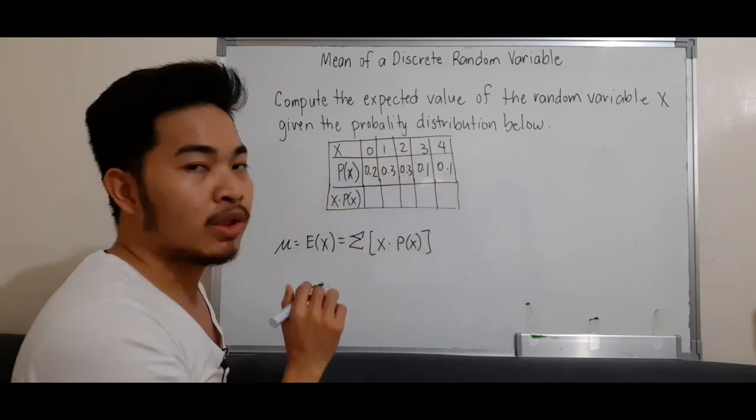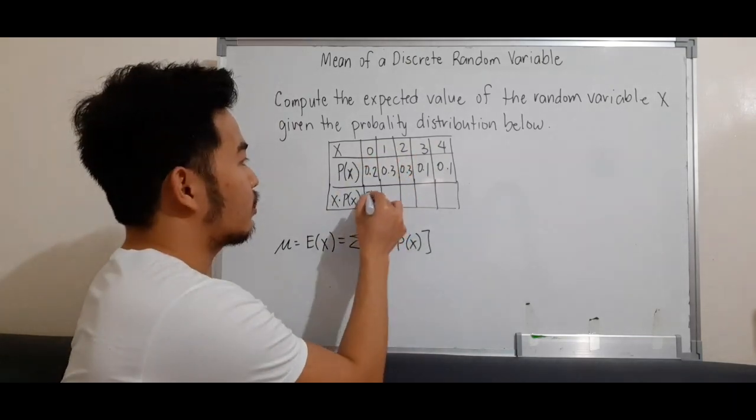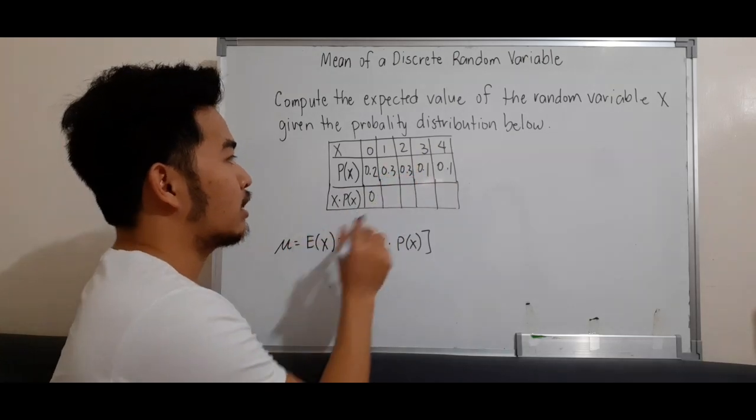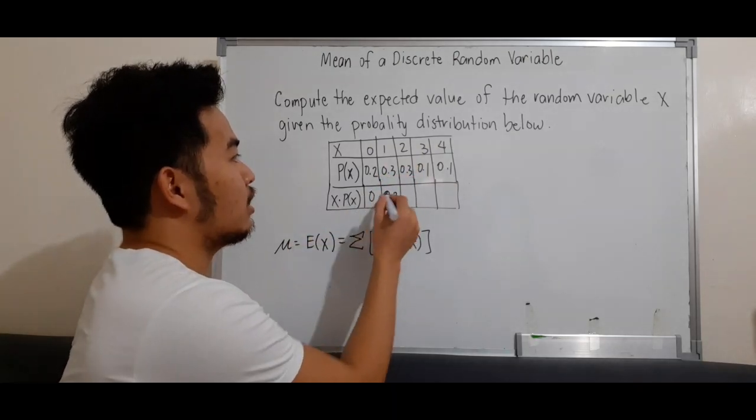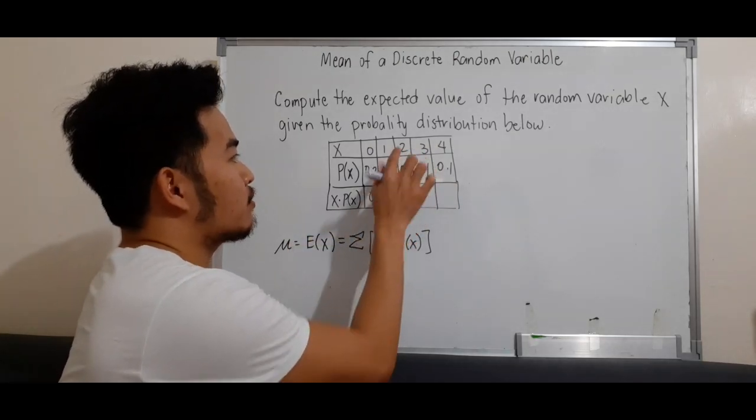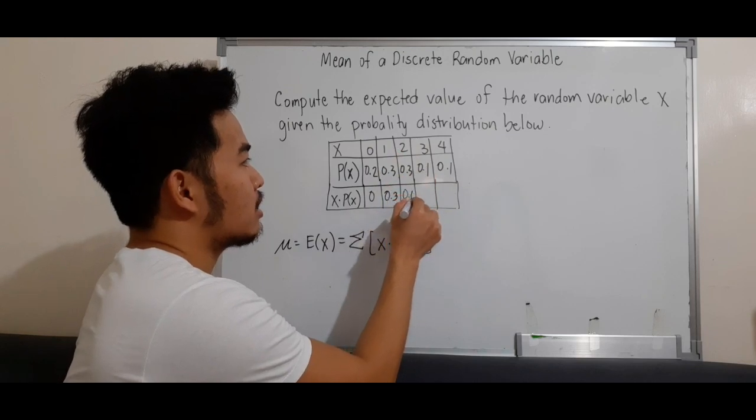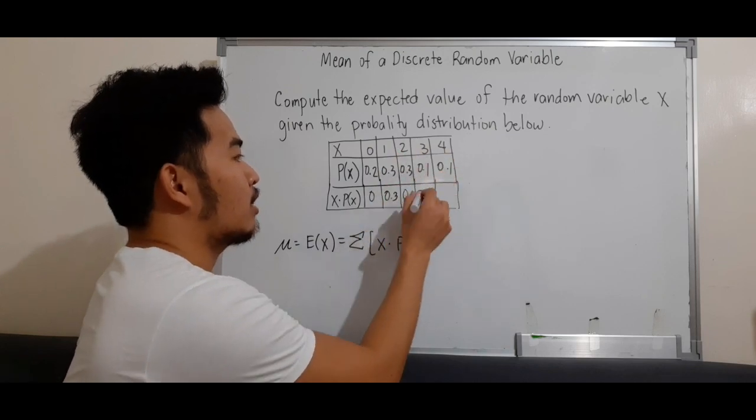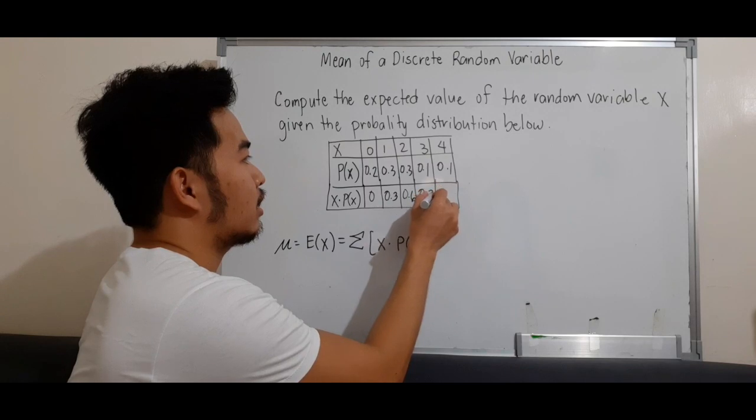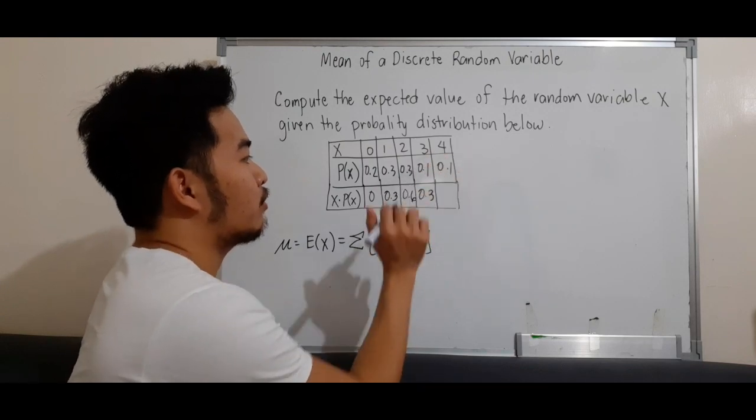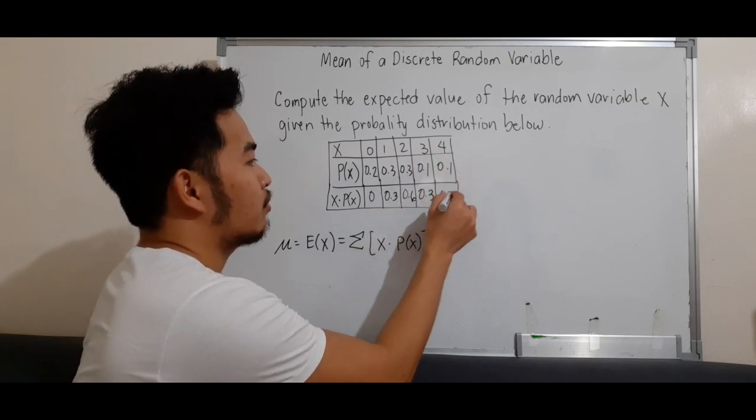0 times 0.2 equals 0. 1 times 0.3 equals 0.3. 2 times 0.3 equals 0.6. 3 times 0.1 equals 0.3, and 4 times 0.1 equals 0.4.